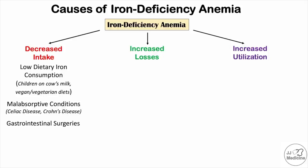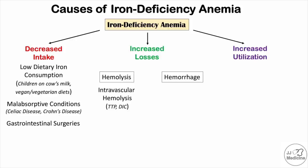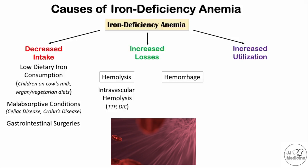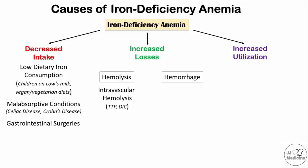Now let's talk about increased losses, which are broken down into two subcategories: hemolysis (breakdown of red blood cells) and hemorrhage (bleeding). In hemolysis, certain blood conditions lead to the destruction of red blood cells through intravascular hemolysis. These include TTP (thrombocytopenic purpura) and DIC (disseminated intravascular coagulation), both of which can lead to red blood cell breakdown, loss of iron, and eventual iron deficiency anemia.